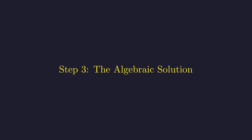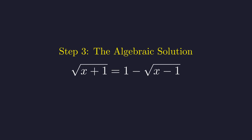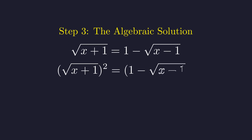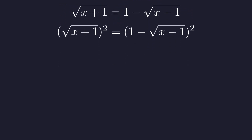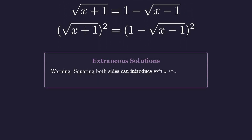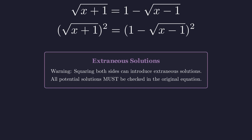Now let's work through this algebraically. A classic move when dealing with multiple radicals is to isolate one of them — I'll move square root of x minus 1 to the right side. Now we square both sides to eliminate that isolated square root. But hold on: squaring both sides is a dangerous move — it's not reversible, and it can introduce fake solutions that don't actually work in the original equation. Whatever we find, we'll need to check it at the end.